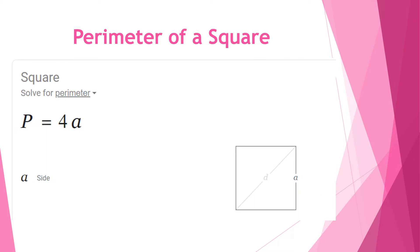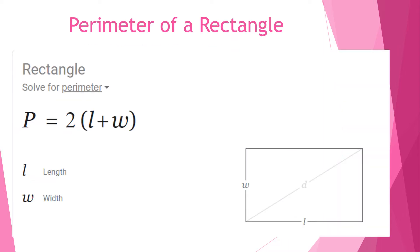Our next formula is the perimeter of a square. To find the perimeter of a square we have the following formula: P equals 4 times a. Since a square has four congruent sides, you just multiply 4 times a, where a again represents the side.